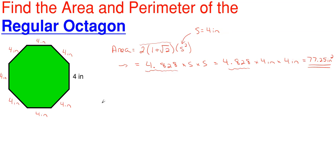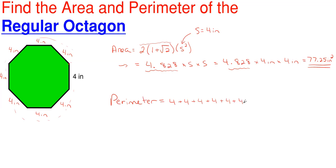Now looking at the perimeter — the perimeter is just a fancy way of saying how much distance does it take to get all the way around the shape from your starting point, ending at the same point. All of our sides are 4 inches, so we are literally going to just add 4 inches together 8 times. So we would have 4 + 4 + 4 + 4 + 4 + 4 + 4 + 4, and adding 4 together 8 times gives us 32 inches to get all the way around our regular octagon.